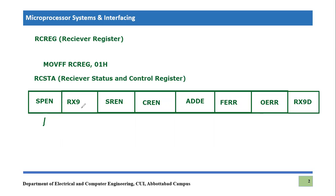The next bit is RX9. As discussed with the transmitter status and control register, though we usually send 8-bit information, there is a provision to send 9 bits. If you are using 9-bit reception, you have to make this bit one. The 9th bit of received data will be stored in the RX9D (data) bit. Normally received values go to the receiver register, but the 9th bit is received here. Since we will be doing only 8-bit reception, we will keep RX9 as zero.